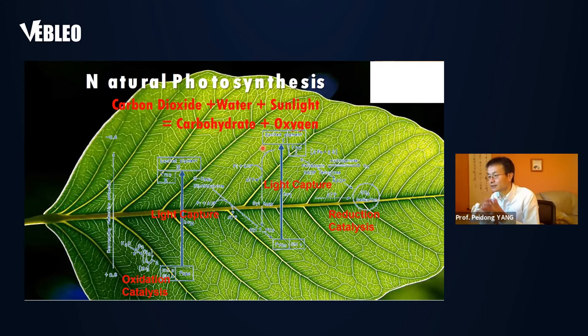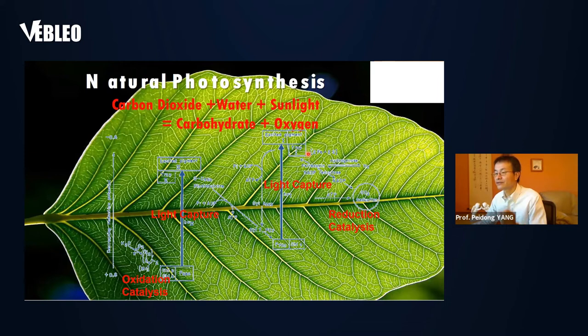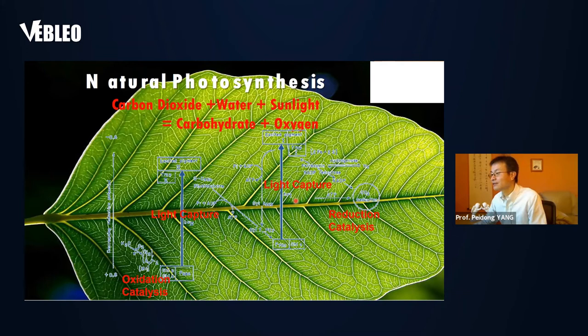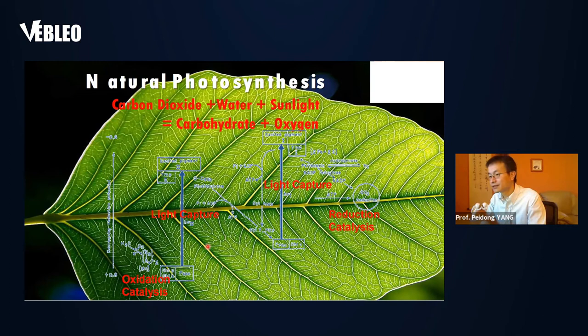Nature is certainly telling us this is possible. Looking at the green leaf in natural photosynthesis, this reaction happens every day: CO2, water, and sunlight go in, carbohydrates come out, and oxygen is released. The leaf accomplishes this through photosystem I and photosystem II for light capture, which channel energy into two half-reactions—water oxidation on one side, releasing oxygen, and CO2 fixation into carbohydrates on the other.